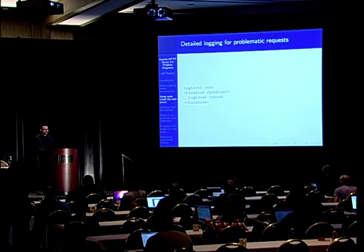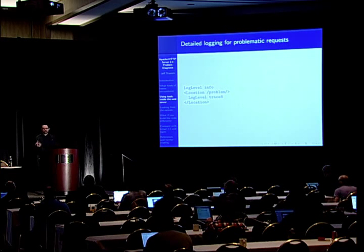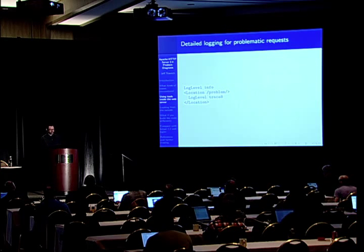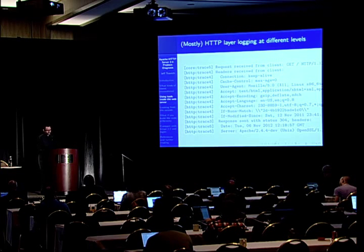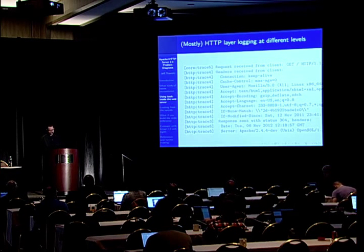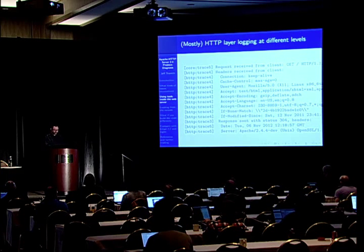Maybe there's a certain URI or portion of the web space that you want to have more detailed logging on — some application you've just deployed that's not quite working right. We can crank up the trace level to the max just for those requests. The core HTTPD also has logging of HTTP data at different layers: a basic summary of the request, headers received from the client, and headers sent to the client at slightly different trace levels. Log-level debug won't show any of these — you need at least log-level trace 3 for the HTTP module, and trace 4 or 5 for other data.